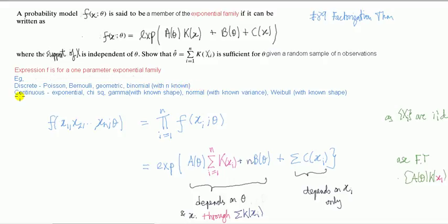For the continuous cases, it includes the exponential, chi-square, gamma where we've got known shape parameter, normal where you've got known variance, Weibull where you have known shape. I've got these conditions with 'known something or other' because.